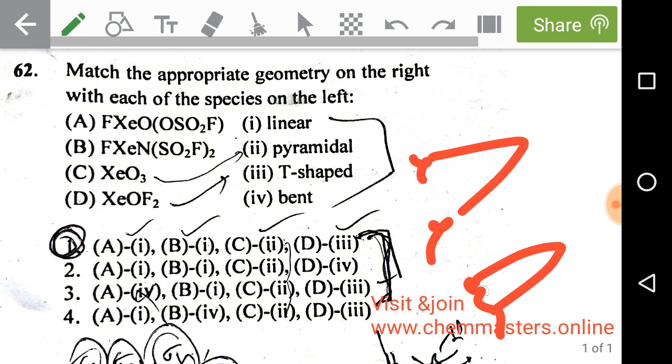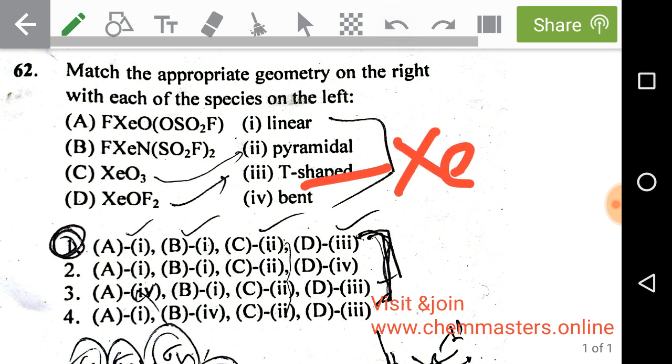Next one is xenon oxy fluoride, which is simply T-shaped. Now, many get confused about what is the correct geometry of the first two species. So here's a simple explanation: we need to look at how xenon makes sigma bonds.